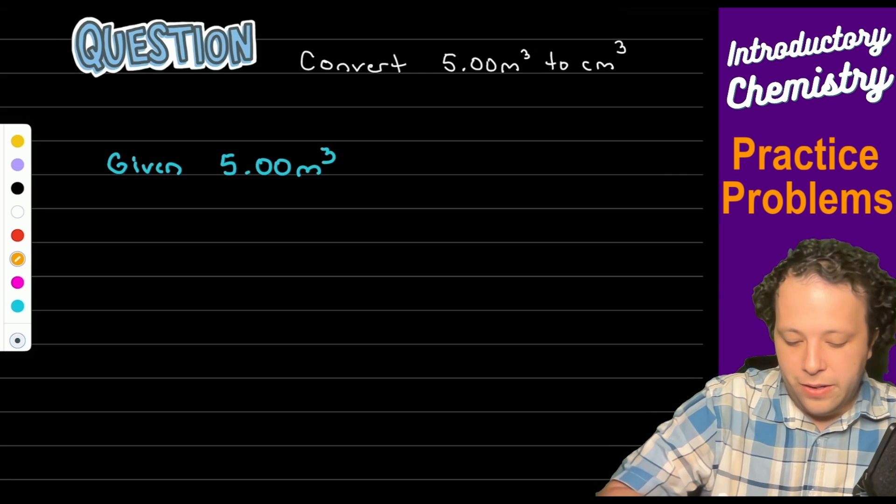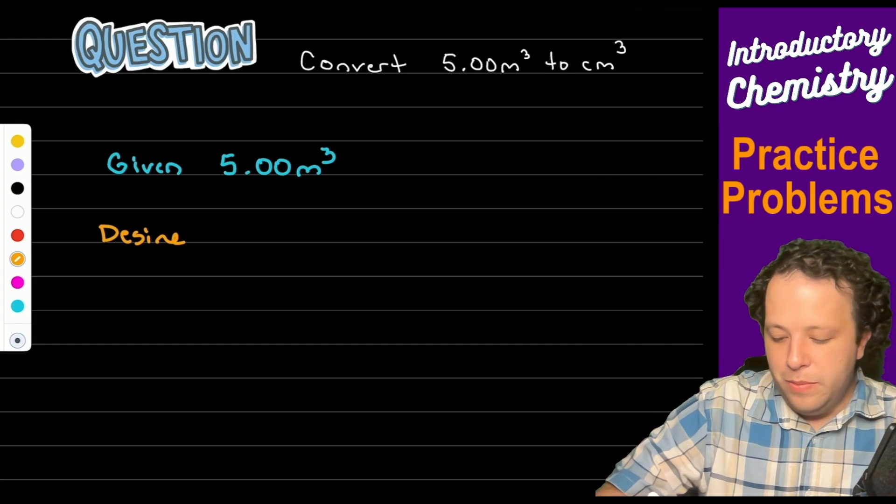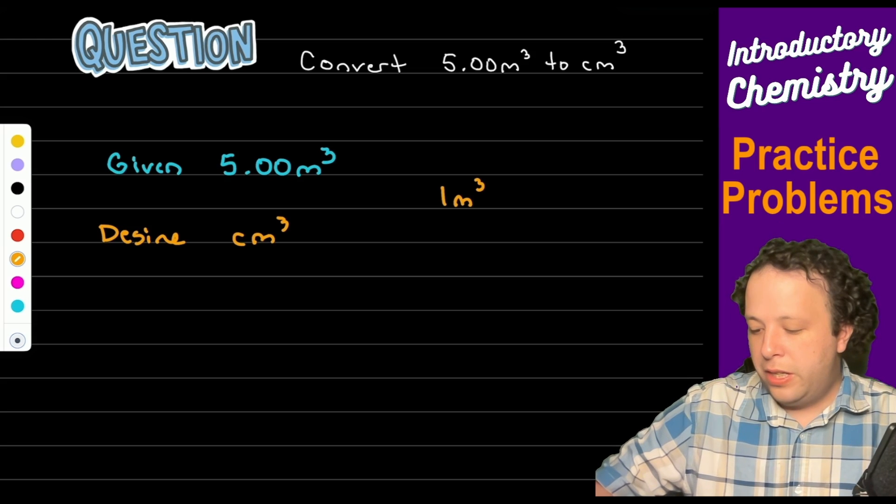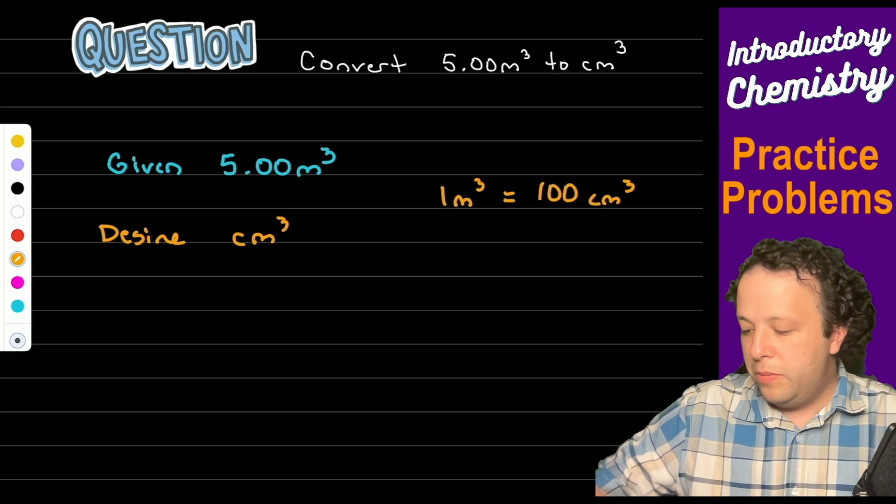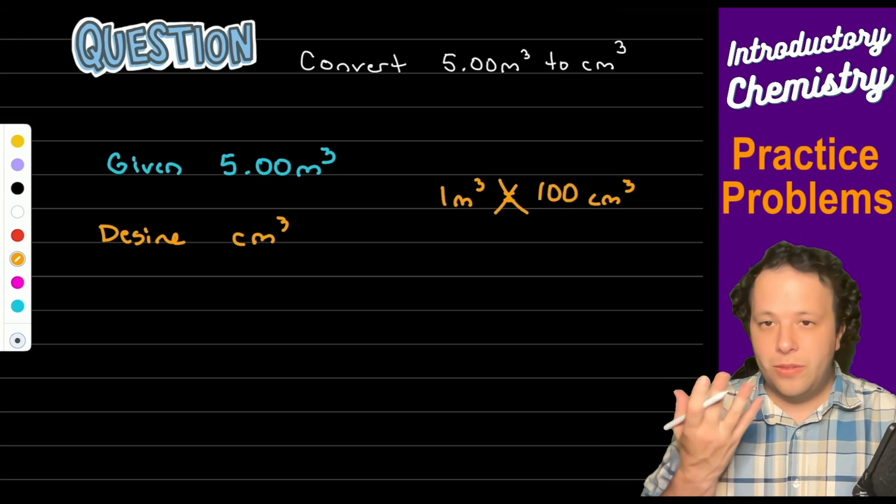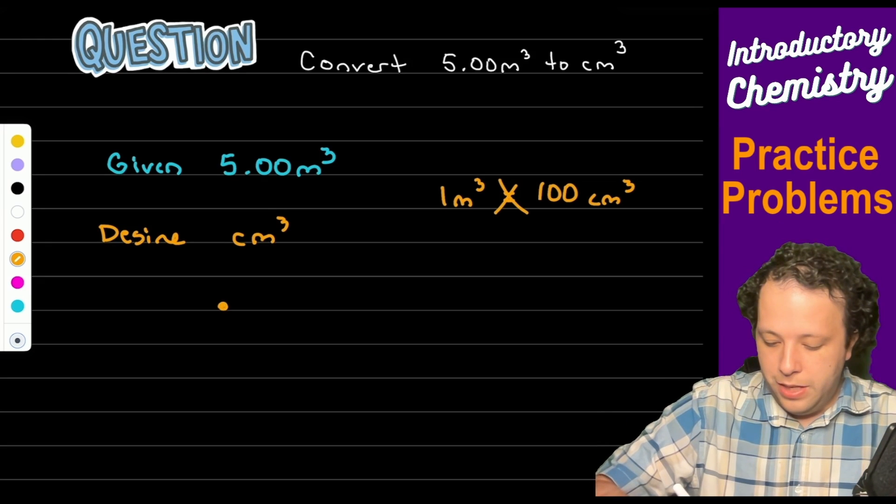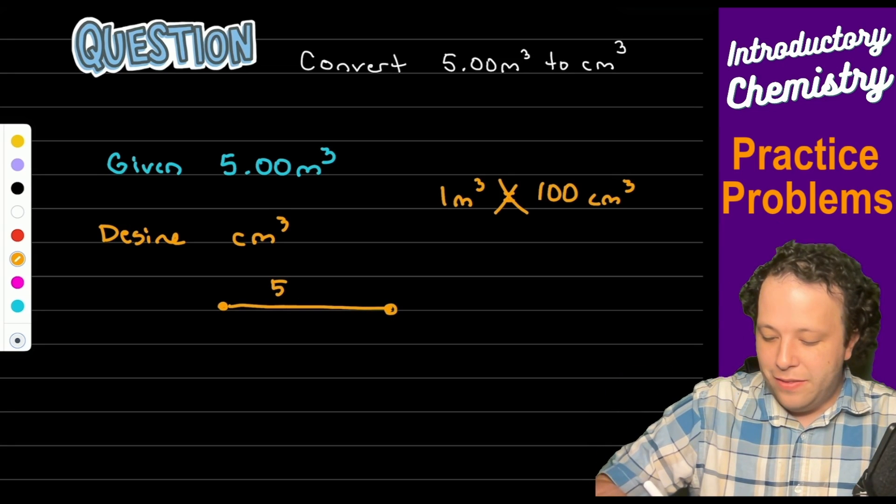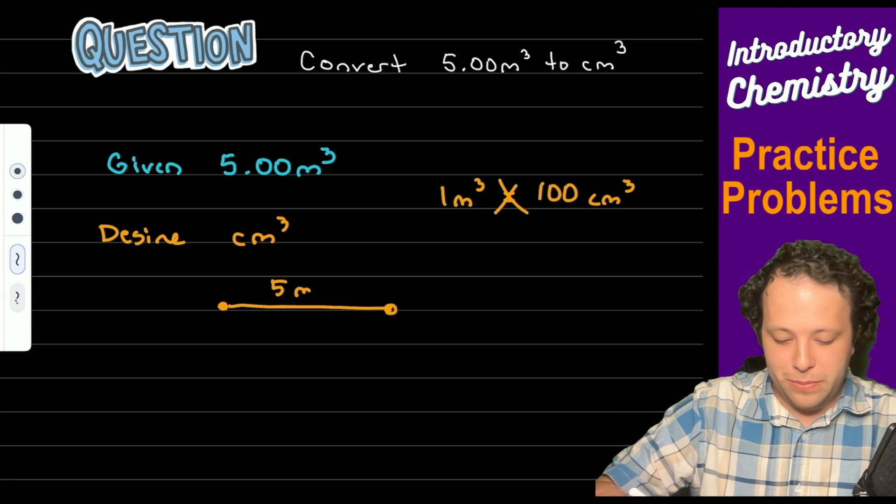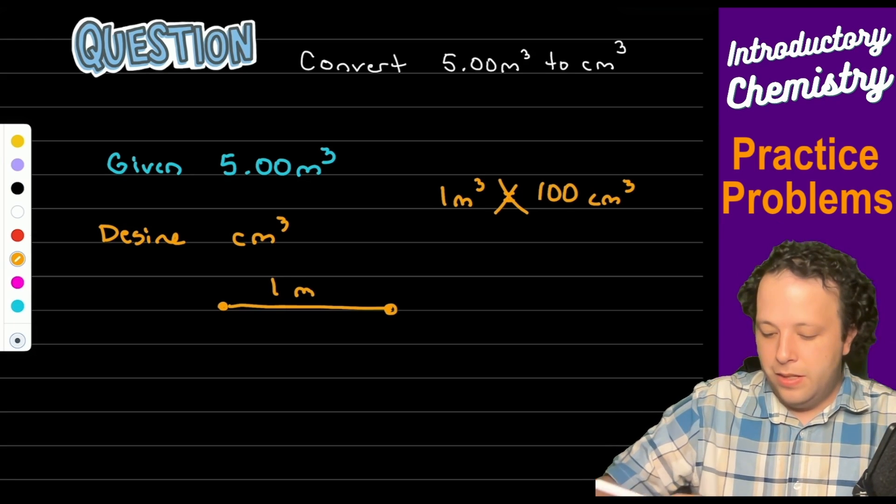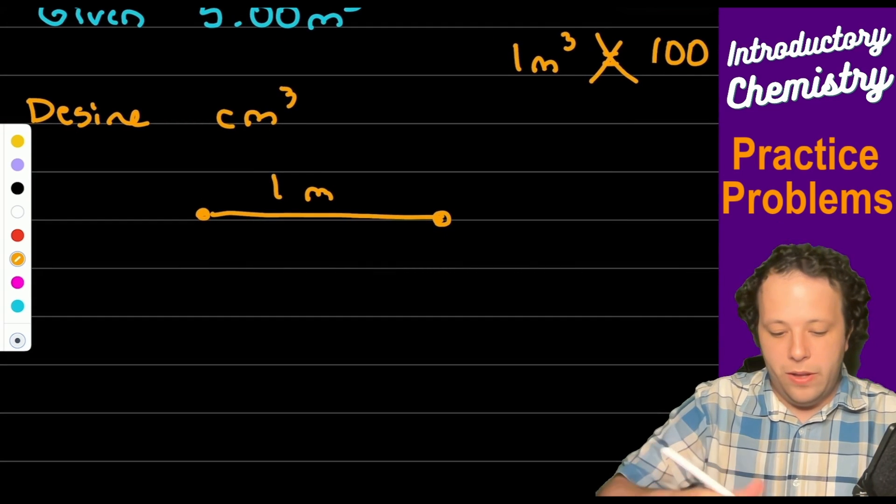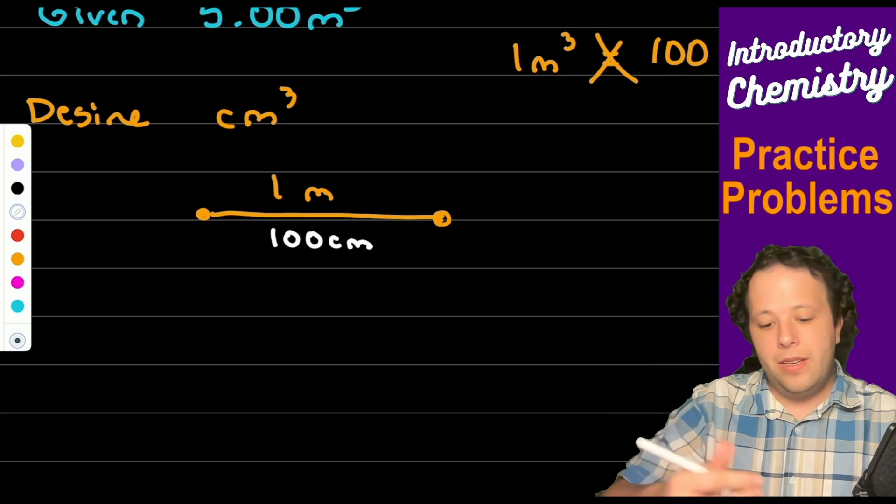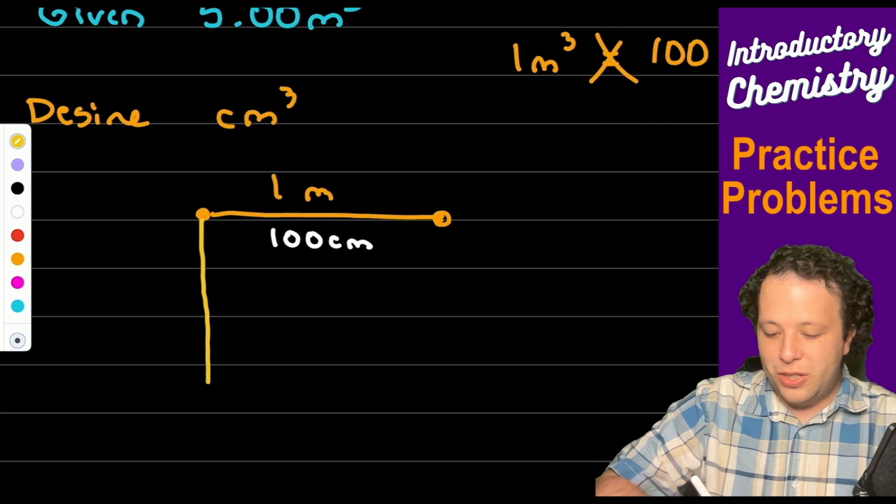So it says what we are given is we have meters cubed and then we desire centimeter cubed. And you might think like okay well can I just say that one meter cubed is equal to a hundred centimeters cubed? And the answer is no you actually can't. So let me prove to you why.